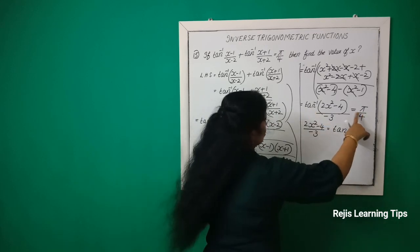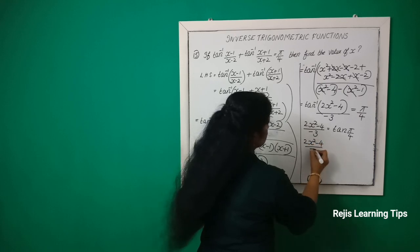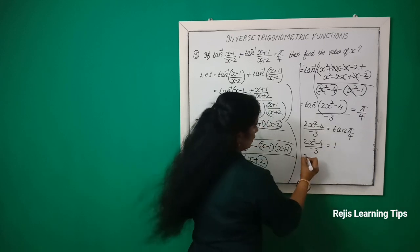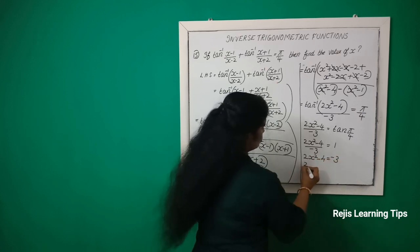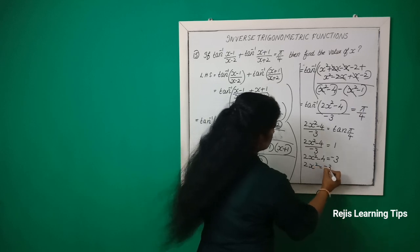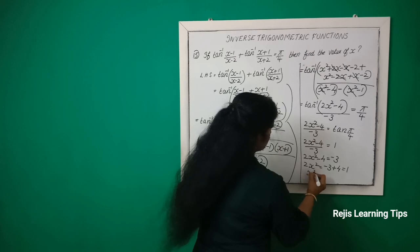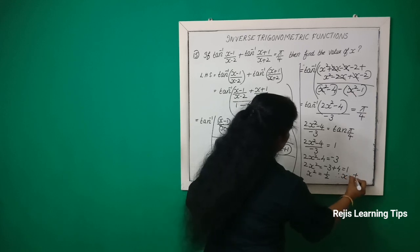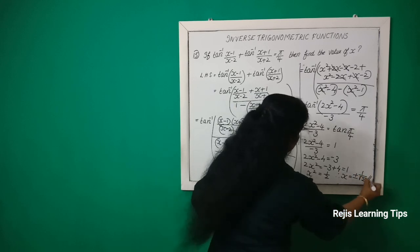Since tan(π/4) = 1, we have (2x²−4)/(−3) = 1, so 2x²−4 = −3, then 2x² = −3+4 = 1, therefore x² = 1/2, and x = ±1/√2.